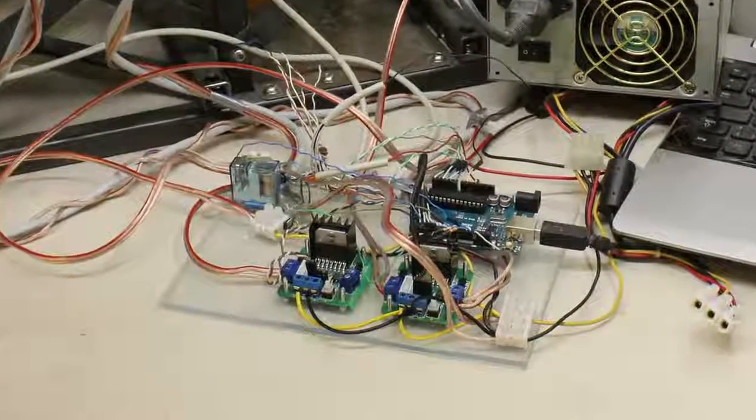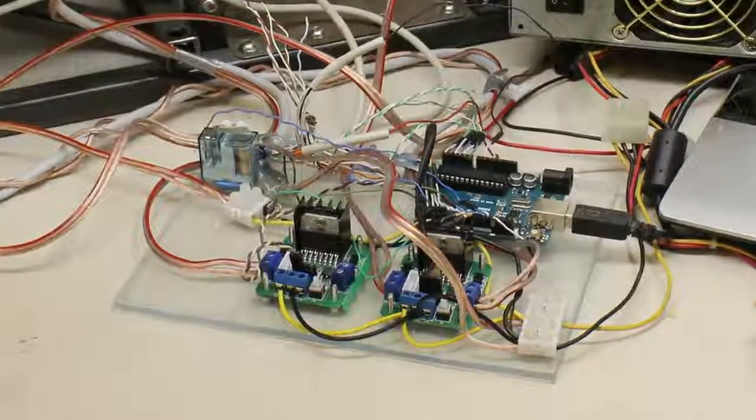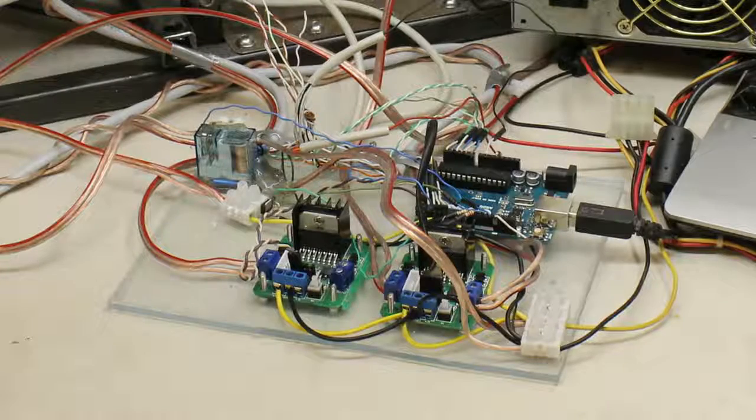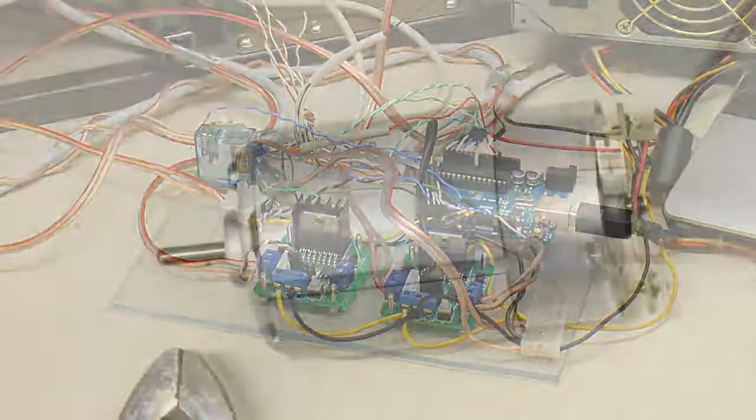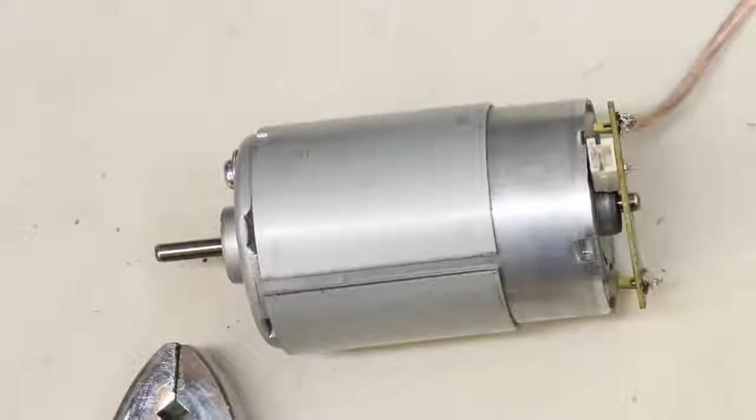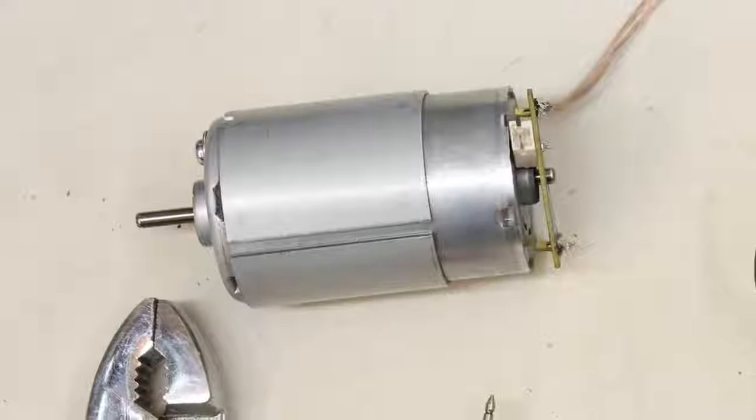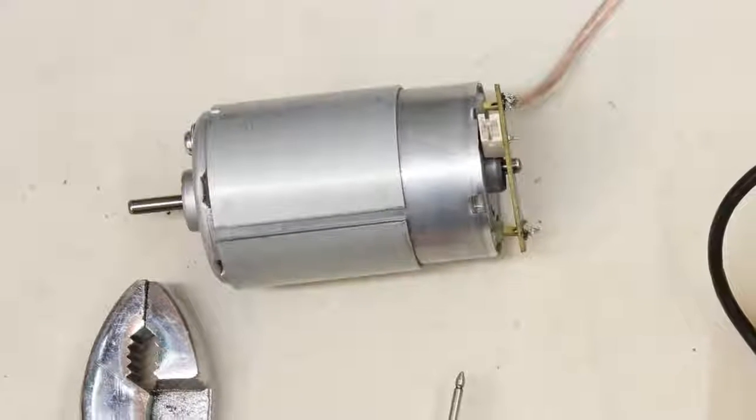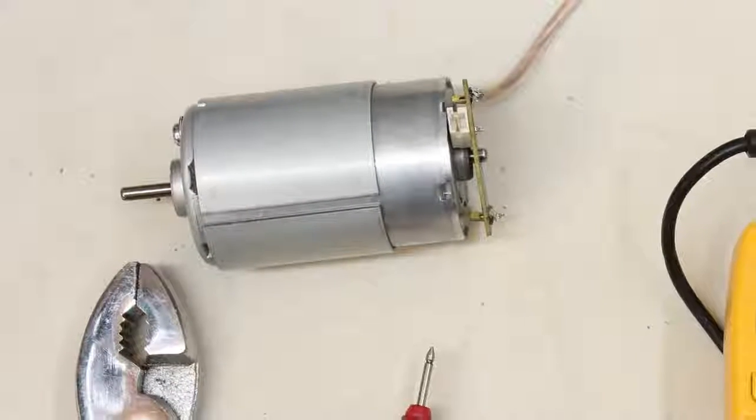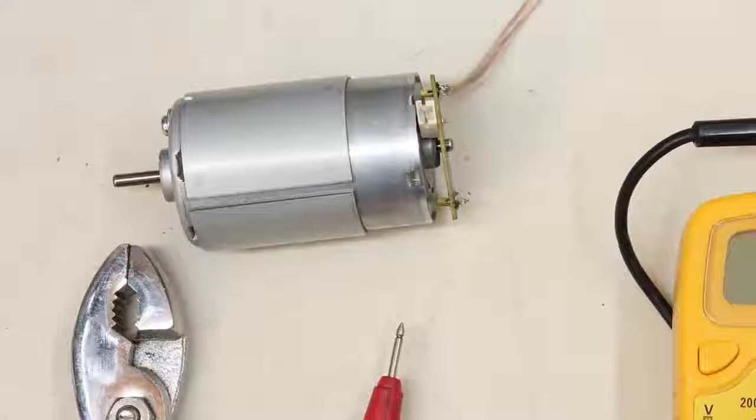Here I am using double H-bridges with the L298N IC that can switch up to 2A of continuous current. First thing to be done is checking the stall current of the motors. Note that you can destroy an unknown DC motor quickly when connecting the device to a too high voltage, especially when recording the stall current.